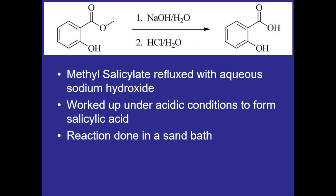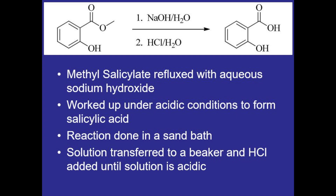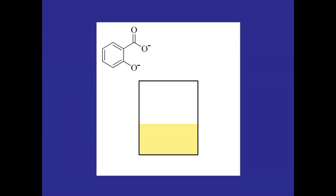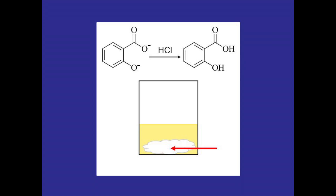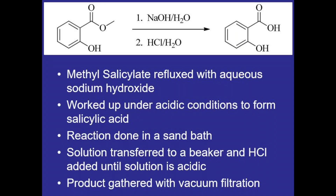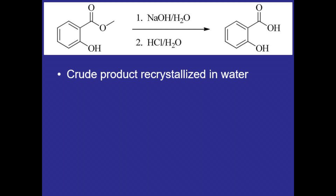The reaction will be done in a sand bath and we'll let it reflux for about 15 minutes. Then the solution will be transferred to a beaker and hydrochloric acid added until the solution is acidic. Under basic conditions the carboxylic acid group will be deprotonated and remain dissolved in the aqueous solution, but as we add the hydrochloric acid, the salicylic acid product will be neutralized and precipitate out of solution as a white slurry.